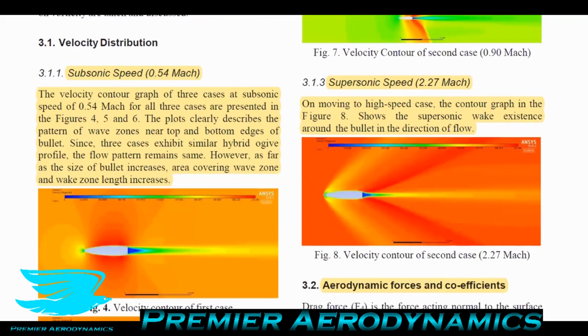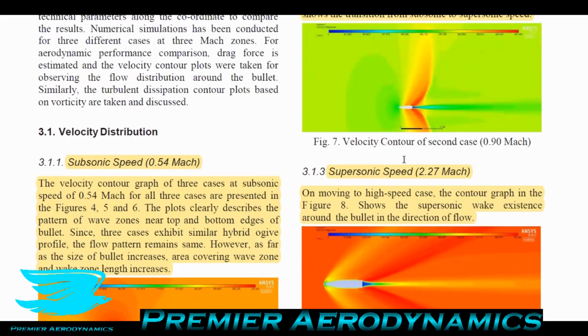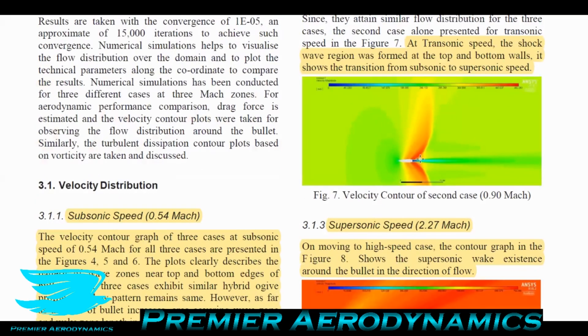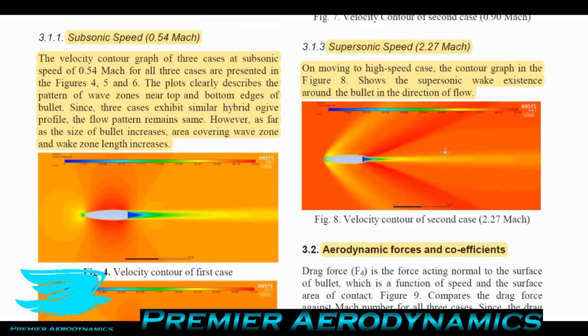At supersonic speed of Mach 2.27, figure eight shows supersonic wake. From what I can tell, there are at least two shocks forming on this bullet now. In transonic there was only one at the back, in subsonic there wasn't really any shock but some wave drag, but now at supersonic there should be at least two shocks.